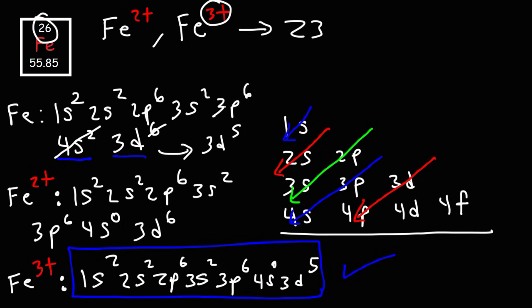Now you know how to write the electron configuration of ions. When dealing with positively charged ions, remove electrons based on the charge, starting from the highest energy level. When dealing with negatively charged ions, add to the electron configuration based on the charge.